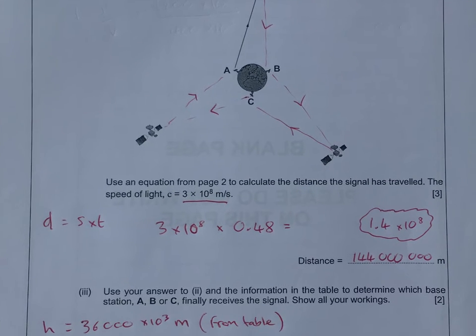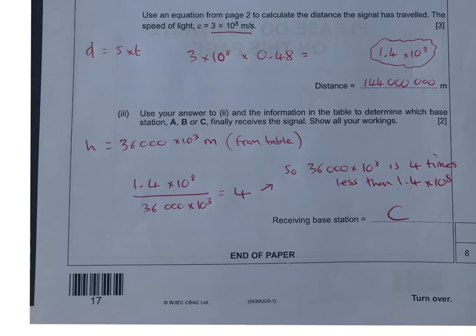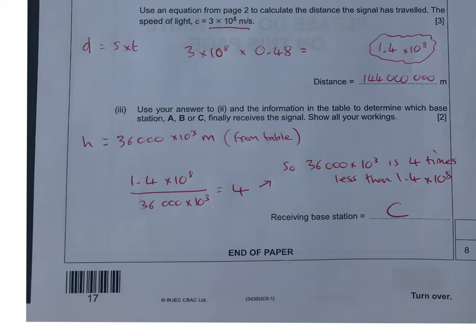We've got to use an equation on page 2 to calculate the distance the signal has traveled, and the speed of light is 3 times 10 to the power of 8. I'm going to take the time that it told me, which is 0.48 seconds, and I've got a speed. To get the distance, we're going to use distance equals speed times time. That's 3 times 10 to the power of 8 times 0.48, and that's going to give me 144 million meters or 1.4 times 10 to the power of 8.